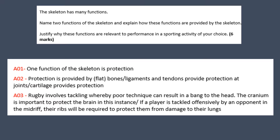For AO3, we need to delve into the relevance to performance in a sporting activity — rugby here. Rugby involves tackling, whereby poor technique can result in a bang to the head, so the cranium is important to protect the brain. We could also give an example of a tackle: if a player is tackled offensively by an opponent in the midriff, their ribs will be required to protect them from damage to their lungs.